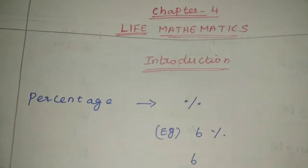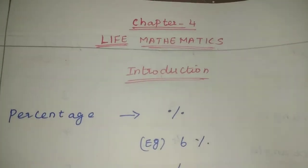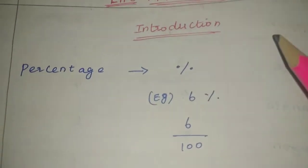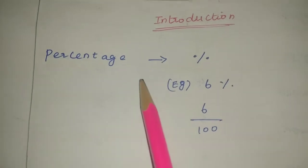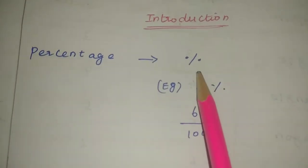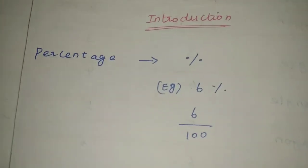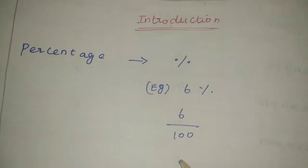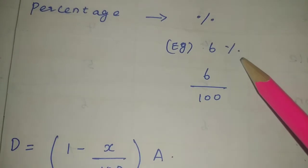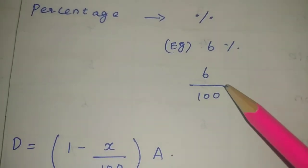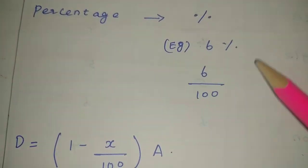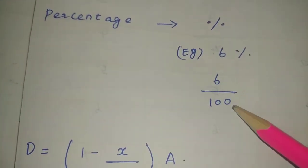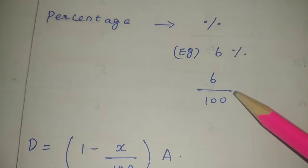Hello friends, I am Saranya. Today we will see 8th standard Maths, Chapter 4: Life Mathematics, Introduction. First, let us learn about percentage. Percentage is represented by the symbol %. For example, every number can be converted as a fraction — 6 percentage means 6 by 100. So, percentage means divided by 100. How to convert: 6 by 100.